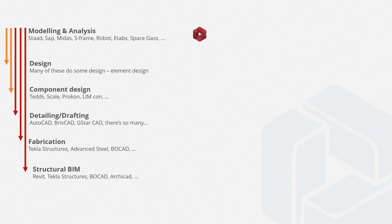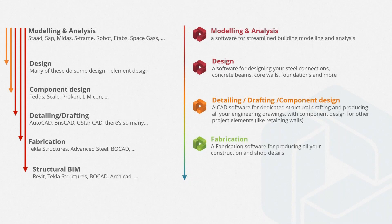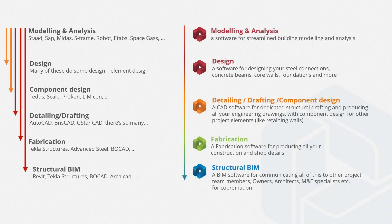As mentioned before, we have different stages in project delivery: modeling, design, component design, detailing, fabrication, and structural BIM. Most engineers are using different software which are not compatible with each other, and this brings a really tedious and time-consuming process. What we offer in Prota Structure Suite is an integrated software that can model, analyze, design, detail, fabricate, and handle structural BIM in a single solution.